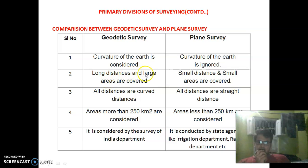Long distances and large areas are covered in case of Geodetic Survey, but in case of Plane Survey, small distances and small areas are covered. In Geodetic Survey, all distances are curved distances, and in Plane Survey, all distances are straight distances.